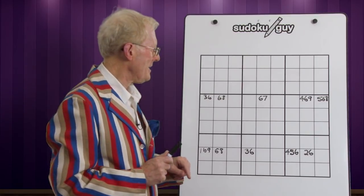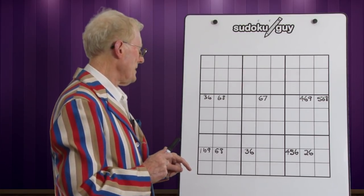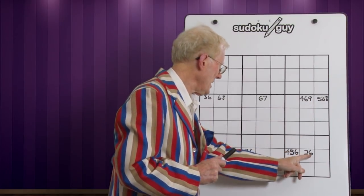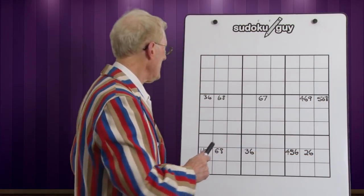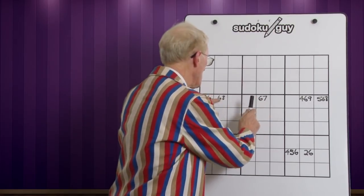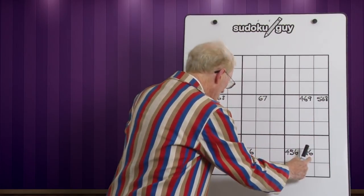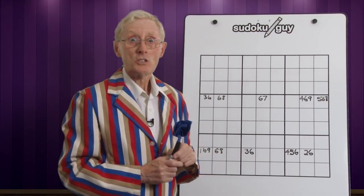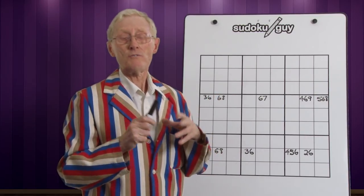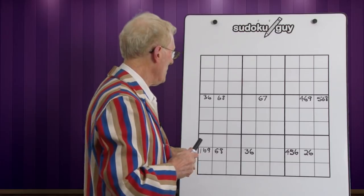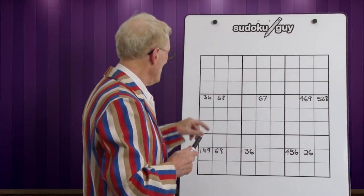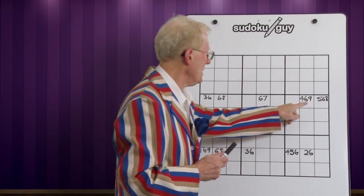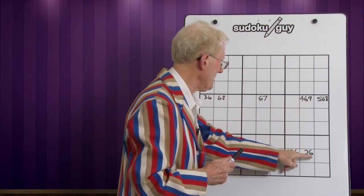Here's the interesting part: if you look across here, there's a six here and a six there. And if you take those four sixes — this one, this one, this one, and this one — they make up a rectangle. So an X-Wing is really looking for a rectangle where you have common numbers. In this column, six only occurs there and there, and in this other column, six only occurs there and there.